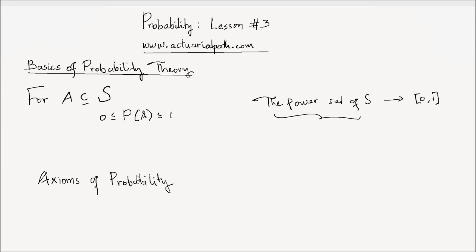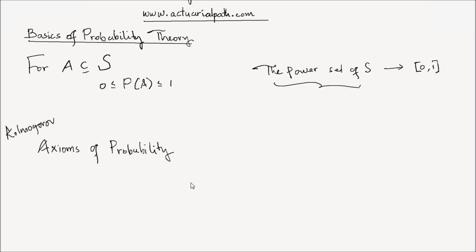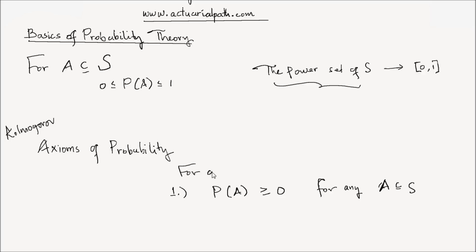These axioms are called the Kolmogorov axioms. The first axiom is that for any event A, which is a subset of a sample space, the probability of A is greater than or equal to zero.